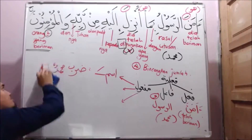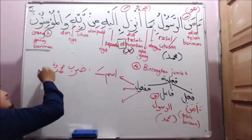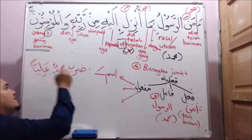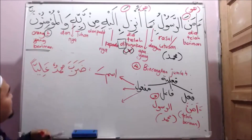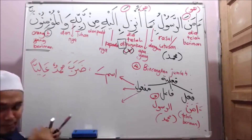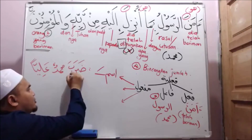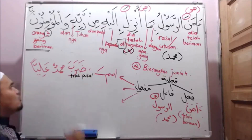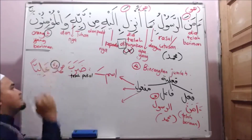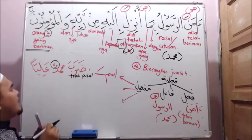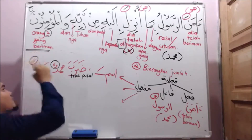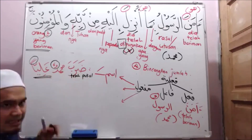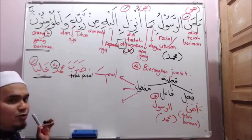Daraba Muhammadun Aliyan. Aliyan - yang ni mudah je tuan-tuan. Daraba - telah pukul, dia fe'il madi, hujungnya baris atas. Siapa yang pukul? Muhammad tuan-tuan, sebab dia berbaris depan. Muhammad pukul siapa? Ali. Ali ni maf'ul tuan-tuan, sebab apa Ali maf'ul? Sebab dia adalah isim yang berbaris atas. Yang ni jelas, saya rasa mudah untuk tuan-tuan.